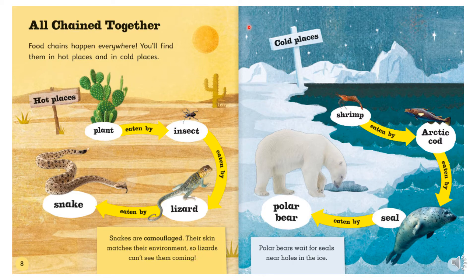In cold places, the shrimp is eaten by the arctic cod, which is eaten by the seal, which is eaten by the polar bear. Polar bears wait for seals near holes in the ice.